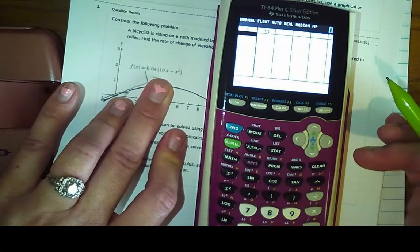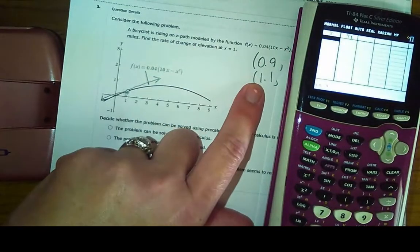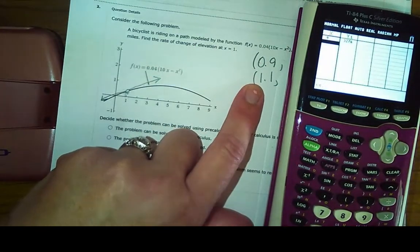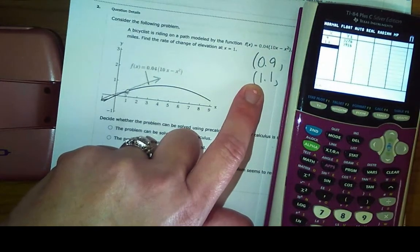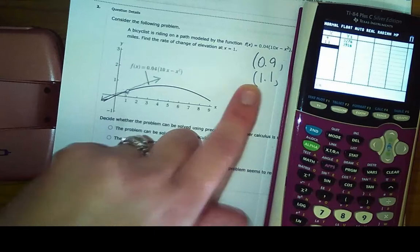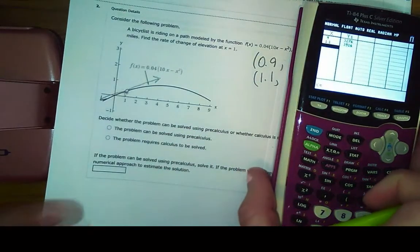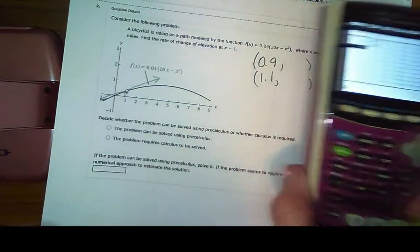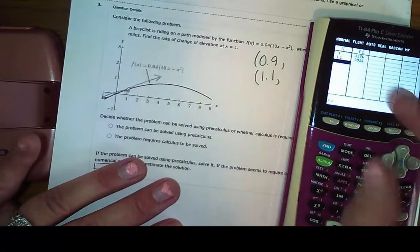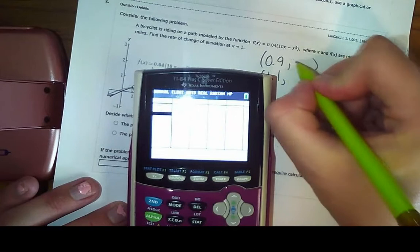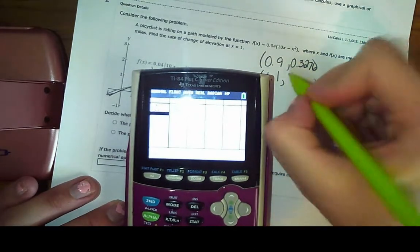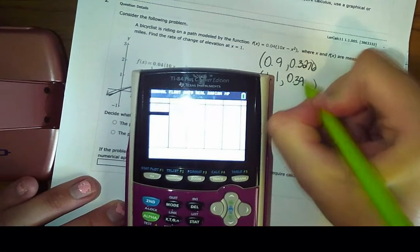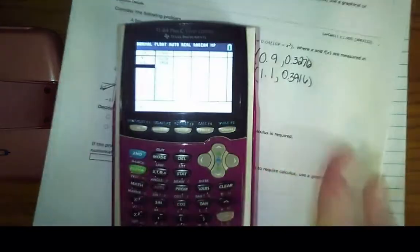If I need to find using a formula, if I need to find multiple answers for different x's, then just put it in the table. So go to y equals and I've got 0.04 times 10x minus x squared. And now when I go to my table, so if you haven't done this, you're going to go to table set. So second window will take you to table set. And then you always want to put your independent to ask. So take your independent and go down here to ask. And what that's going to do is instead of populating the table by itself, you're going to tell it what to use. So now do second graph, which will take you to the table. And then what x values do I want? Well, I just said I want 0.9. So hit enter and it's going to figure it out for you. And then do 1.1 and hit enter.